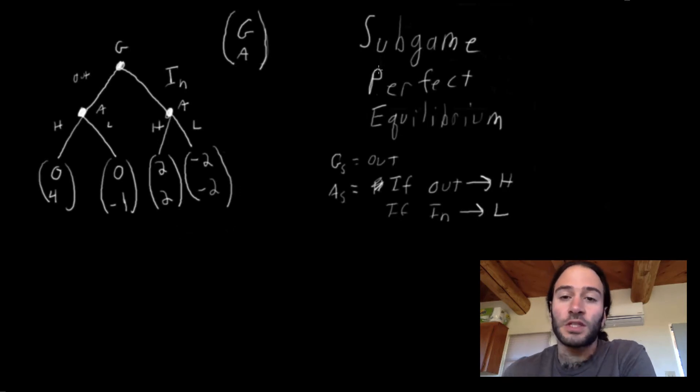So what the Subgame Perfect Equilibrium does here is it says, if we actually got to Google playing in, this cannot be a Subgame Perfect Equilibrium strategy because if we actually got here, Apple would play H instead of L.